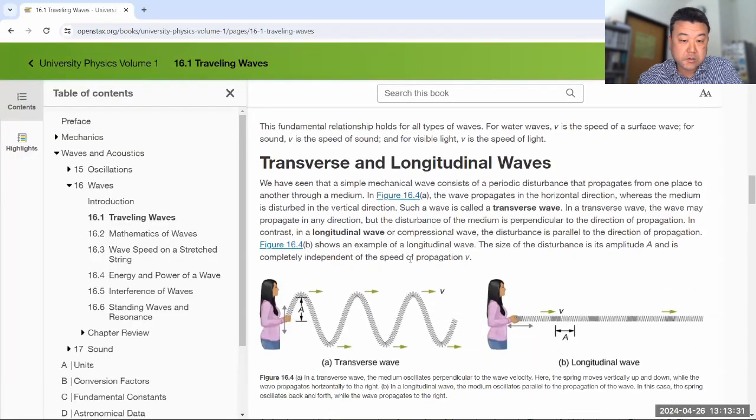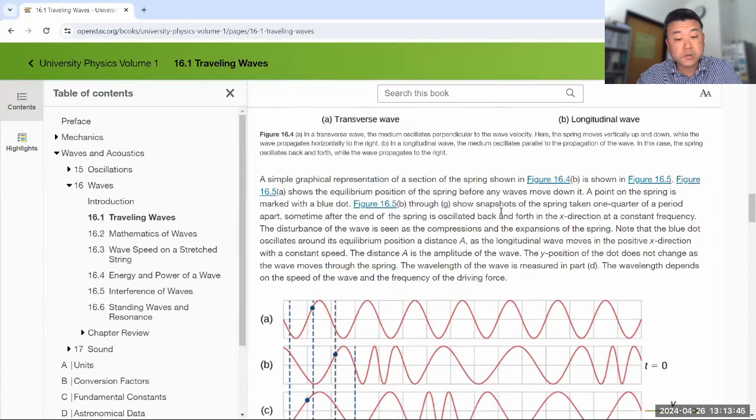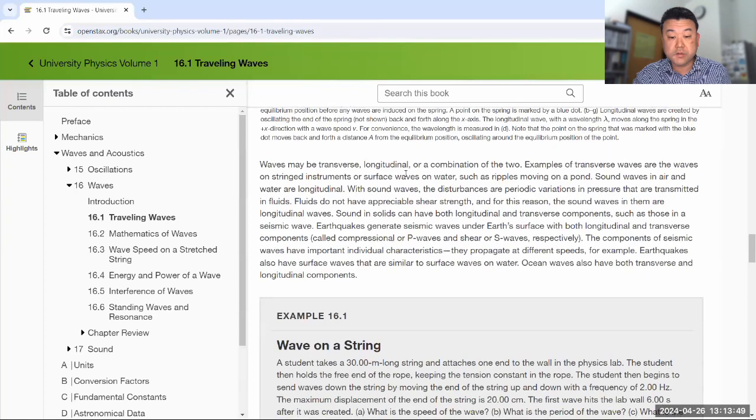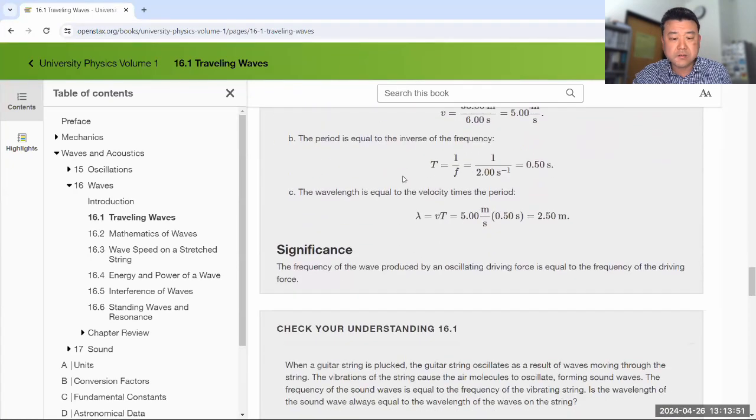It also gives you terms like a transverse wave where the displacements are perpendicular, transverse to the direction of propagation or the longitudinal wave where the displacements are along the same direction as the propagation direction. All these terminologies are good to know, so read through, I don't think this section is very mathematical.